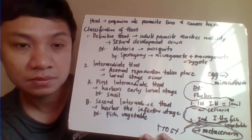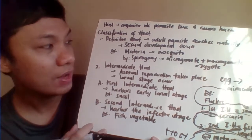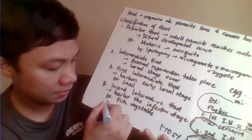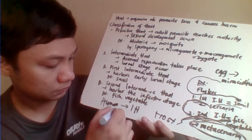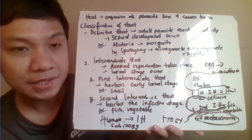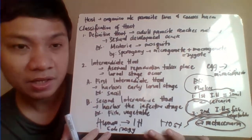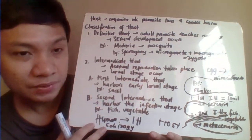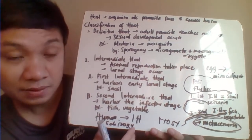For malaria, the mosquito serves as the definitive host where sexual reproduction (sporogony) occurs. The human serves as the intermediate host where asexual reproduction (schizogony) takes place.